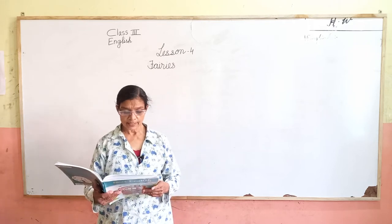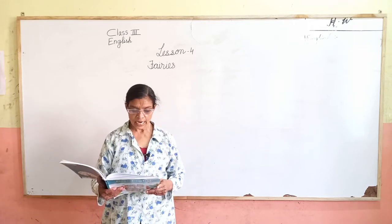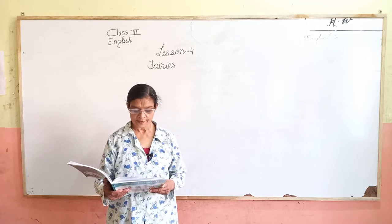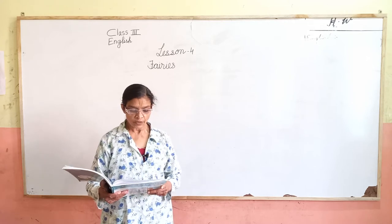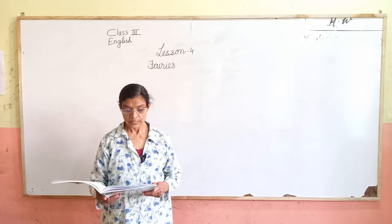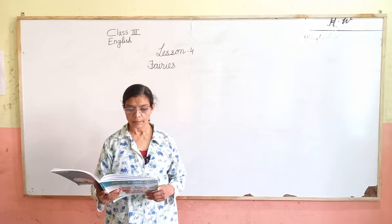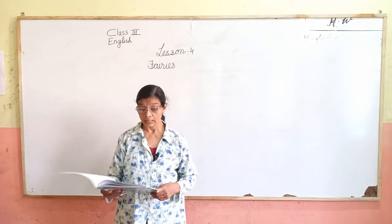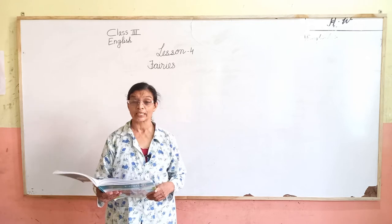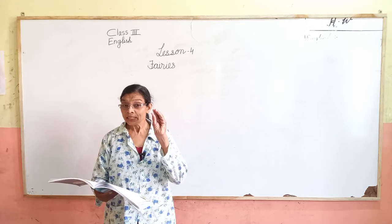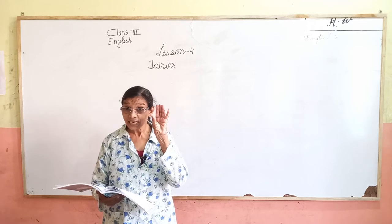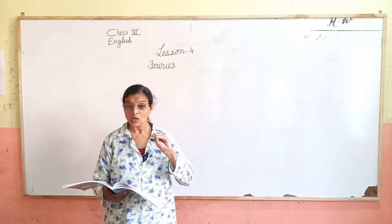Grandma says that sometimes when stars are twinkling and a new moon shines, there come times when you can see fairy land. Grandma says kabhi kabhi — jab taare chamakte hain asman mein — aisa nazar aata hai. Aasha taaron ko dhyan se dekho asman mein, chamakte hue.